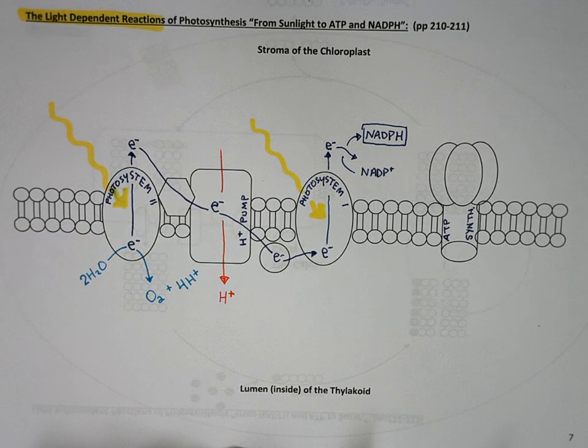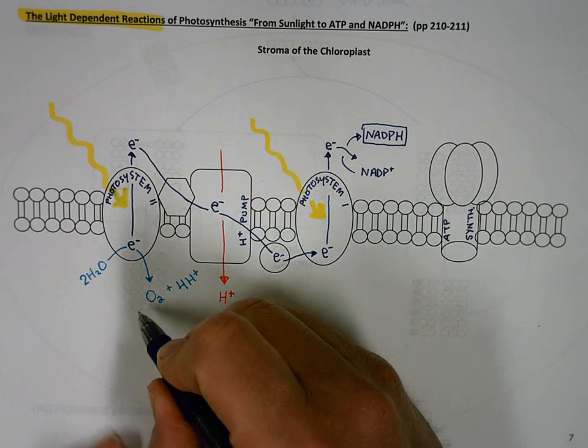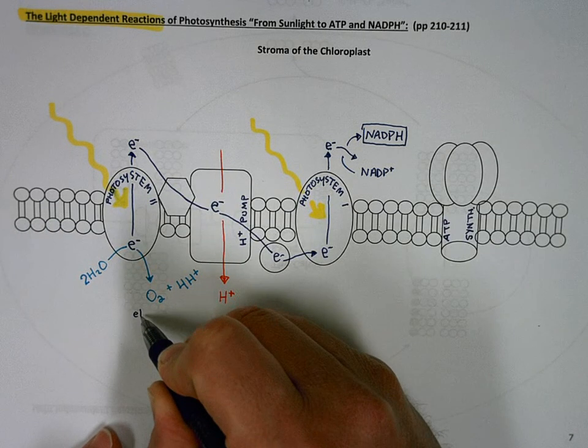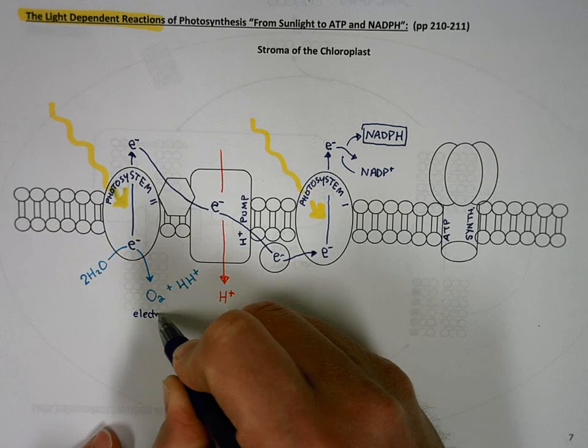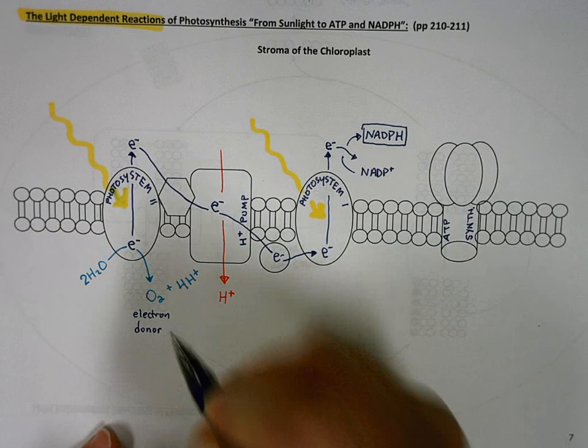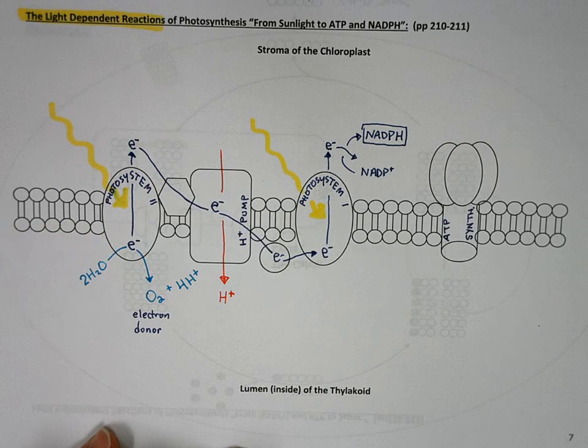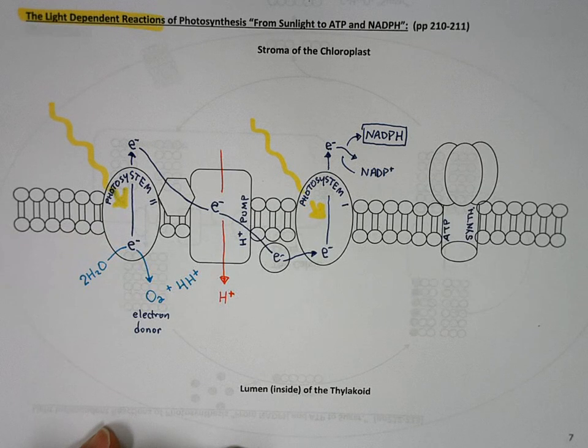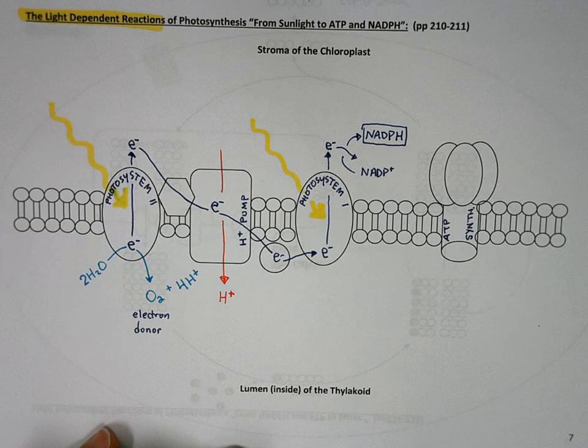The interesting thing here is, oxygen is the electron donor in photosynthesis electron transport system. If you remember, in aerobic cellular respiration, oxygen was the final electron acceptor to make water. Here, we're splitting water to donate the electron, whereas in aerobic cellular respiration, we were donating the electron to make water. You can go back and look at that if you like.